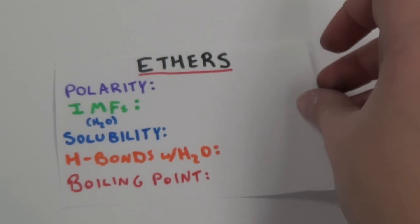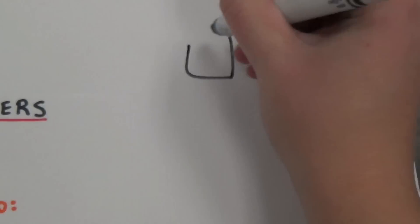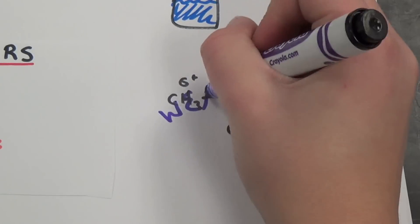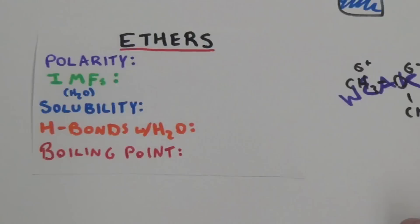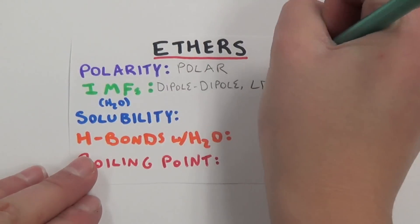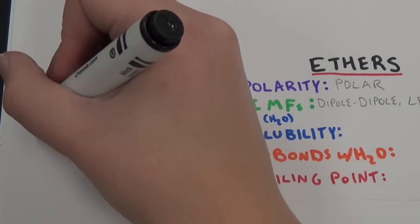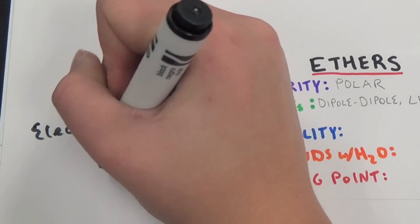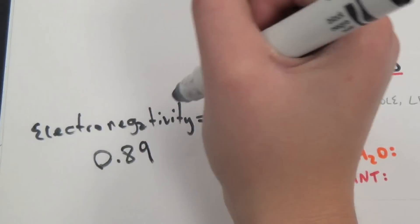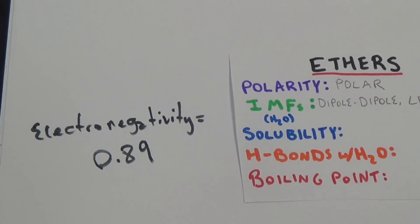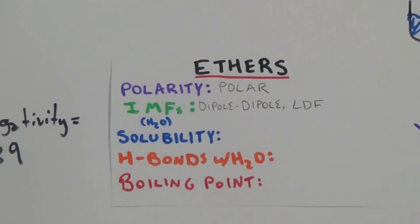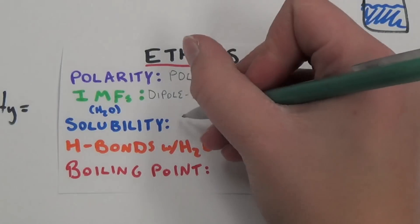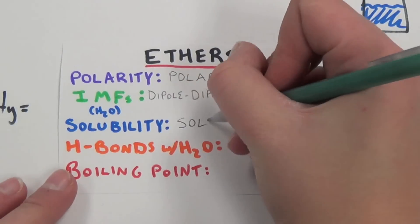Our next functional group is ethers. Ethers exist naturally as a liquid. The oxygen present in ether's carbon chain results in a very weak dipole. Although the polarity is greater than that of hydrocarbons, the carbon-oxygen bond resembles carbon-carbon bonds and is not very polar, with an electronegativity difference of only 0.89. Although an oxygen atom is present, ethers are unable to form hydrogen bonds with themselves because the oxygen atom is not bonded to hydrogen.